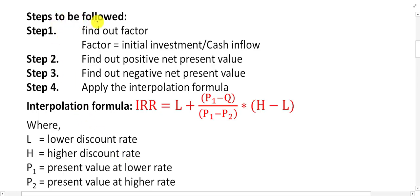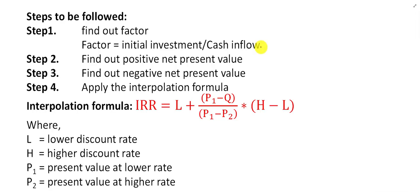These are the steps to calculate the IRR. Step one: find out the factor. The factor is equal to the initial investment divided by cash inflows. Step two: find out the positive net present value. Step three: find out the negative net present value. One NPV should be positive and one should be negative.